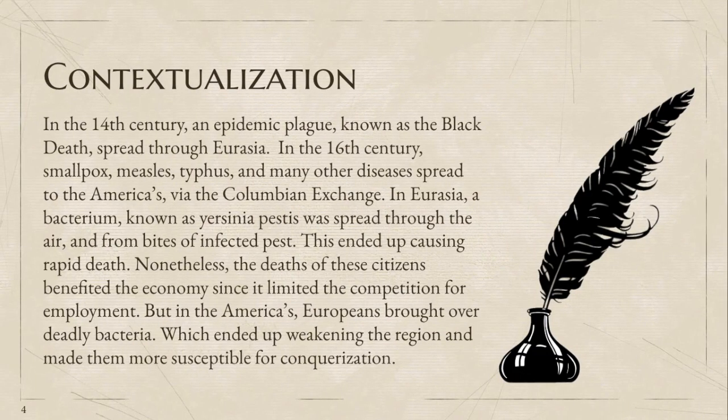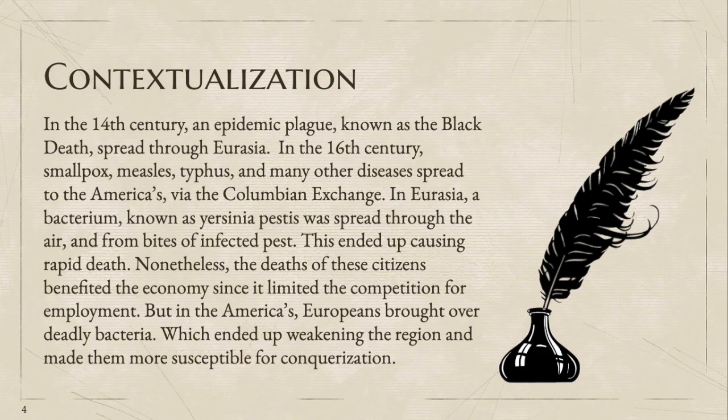In the 14th century, an epidemic plague known as the Black Death spread through Eurasia. In the 16th century, smallpox, measles, typhus, and many other diseases spread to the Americas via the Columbian Exchange. In Eurasia, a bacterium known as Yersinia pestis was spread through the air and from bites of infected pests, which ended up causing rapid death. Nonetheless, the deaths of these citizens benefited the economy since it limited the competition for employment.